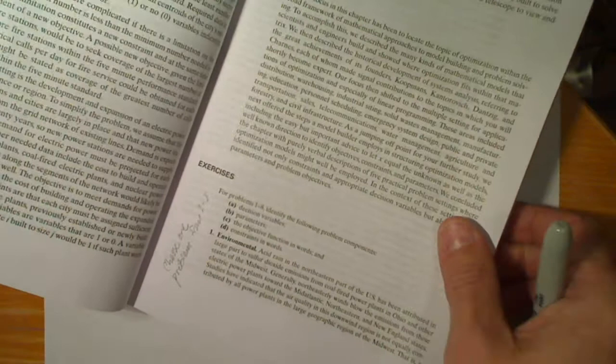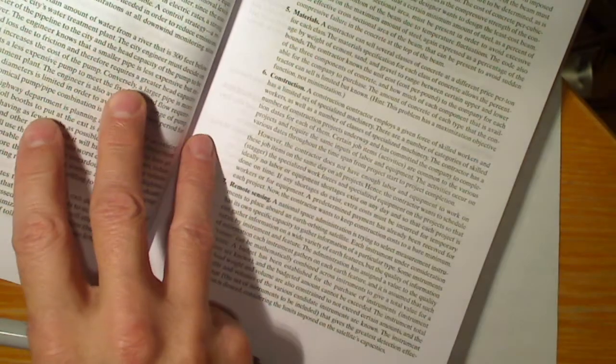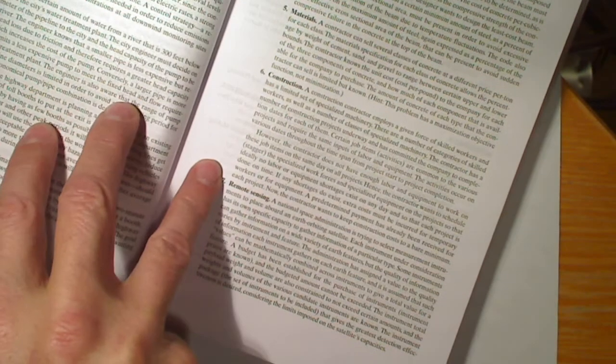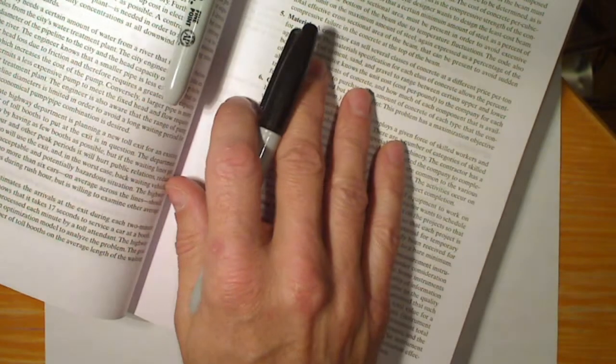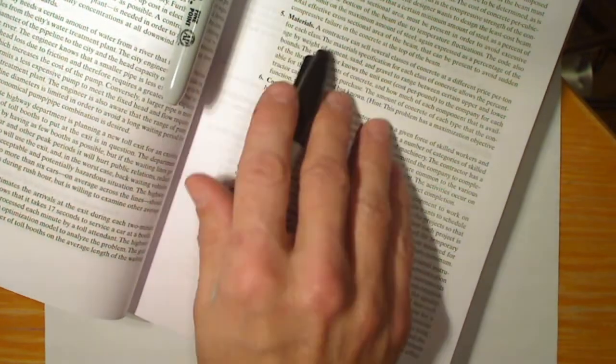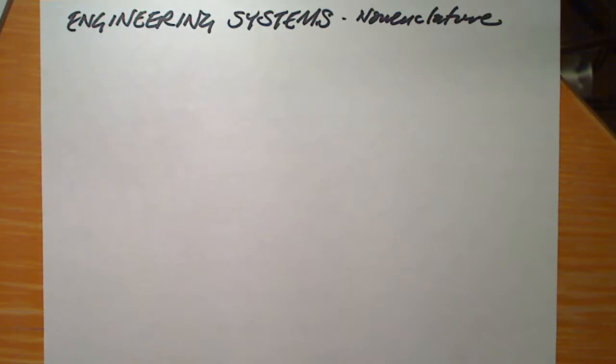So I'm going to pick a problem from Revell Whitlatch Wright and show an example of how we can define these four things without making a mathematical model, just describing what they mean in this example. And our example is going to be number five, the materials.